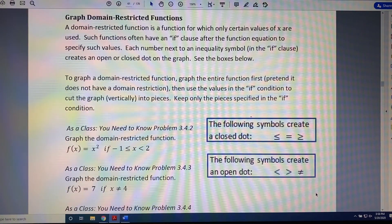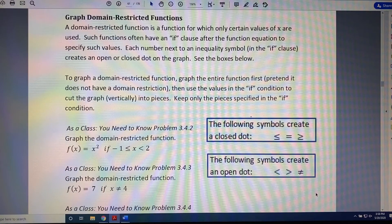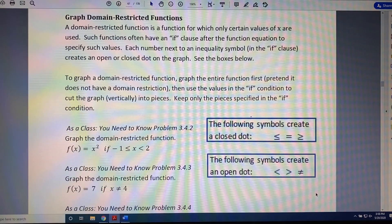To graph a domain-restricted function, graph the entire function first. Pretend it does not have a domain restriction. Then, use the values in the IF condition to cut the graph vertically into pieces. Keep only the pieces specified in the IF condition. Then apply your symbols.